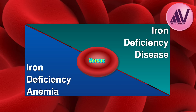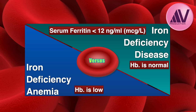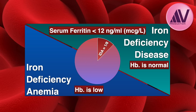Iron Deficiency Disease refers to depleted iron stores. IDD is defined as serum ferritin less than 12 nanograms per ml (or micrograms per liter), but hemoglobin is normal. Iron Deficiency Anemia refers to not only depletion of iron stores, but also a significant decrease in hemoglobin levels that may produce clinical features. In an iron-depleted population, one-seventh have IDA while the remaining six-sevenths suffer from IDD. Thus, iron deficiency anemia is just the tip of the iceberg. Consequences of IDD are similar to IDA and it must be treated more vigorously.